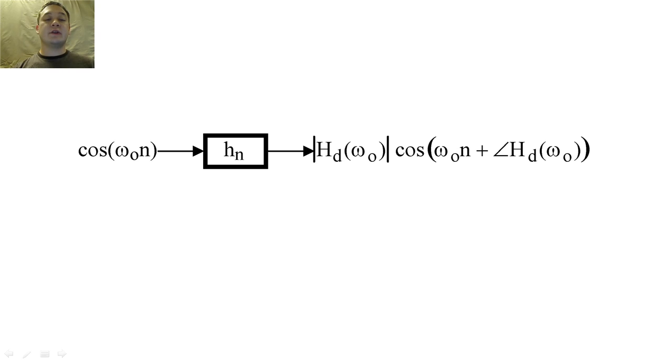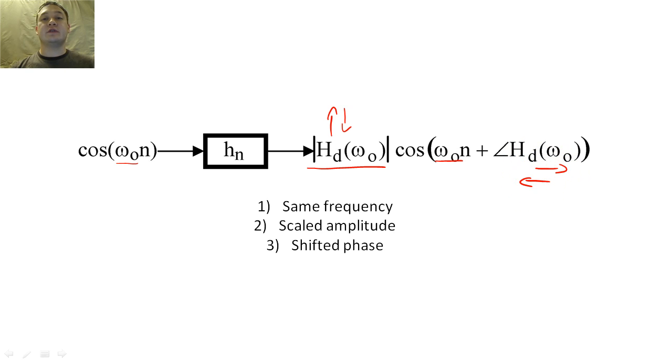Since we're more familiar with cosines, and a cosine is simply the summation of a pair of complex conjugates e^(jω₀n), we can easily show that a filtered cosine will have the same frequency as the original cosine, but its amplitude will be scaled by the magnitude of the frequency response evaluated at ω₀, and its phase will be shifted by the phase of the frequency response evaluated at ω₀.